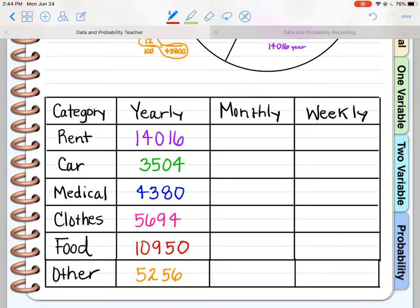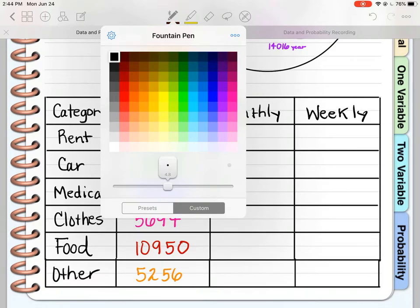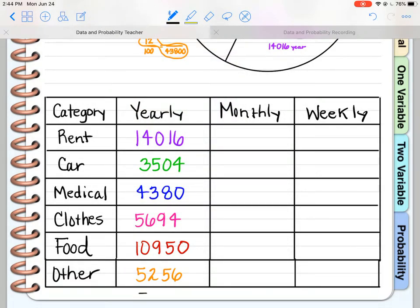Now think with me just a minute. Before I go ahead and do all this other math, would it make sense to add this column? Let's add our yearly column on the calculator: $14,016 plus $3,504 plus $4,380 plus $5,694 plus $10,950 plus $5,256 equals $43,800, and remember that is what I had to start with. So this category should add up to that total amount.